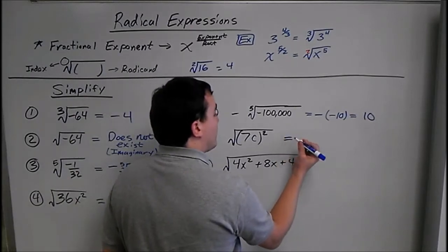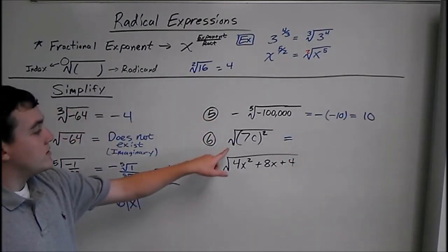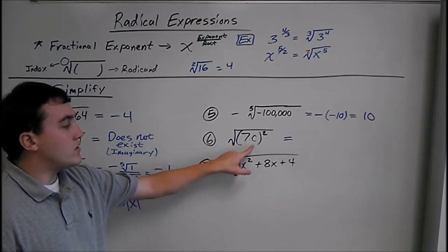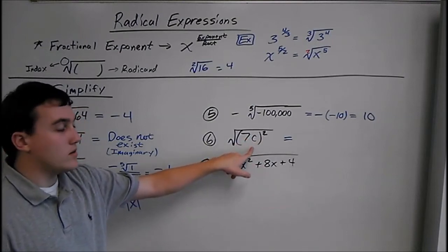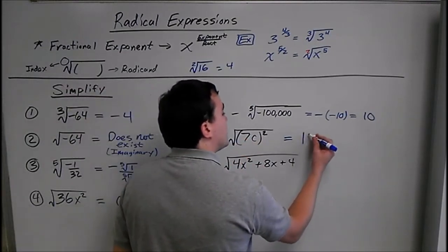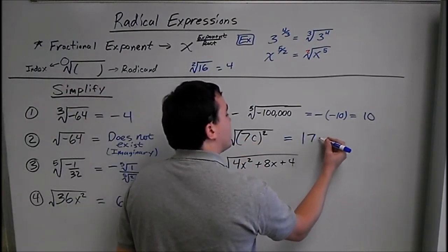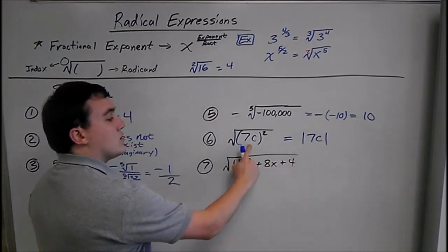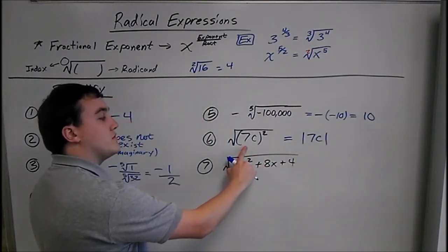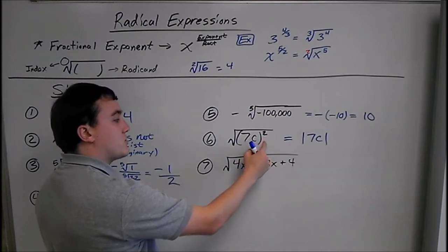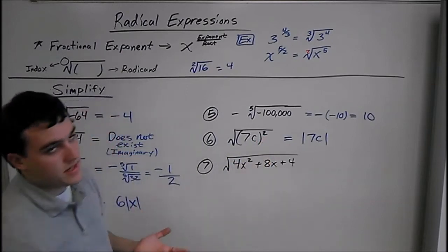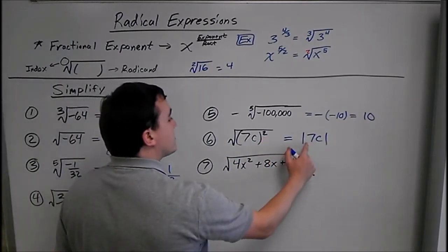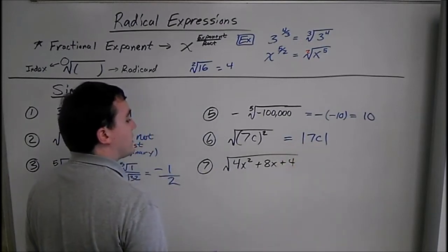We have the square root of something squared. So we know whatever comes out here it's going to be positive. We're looking for what times what equals 7c squared. We know that's 7c times 7c. The 7 can be inside or outside of the absolute value.